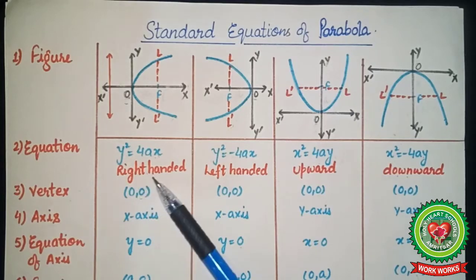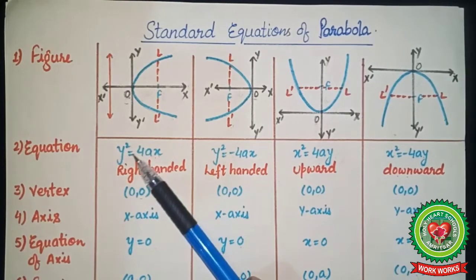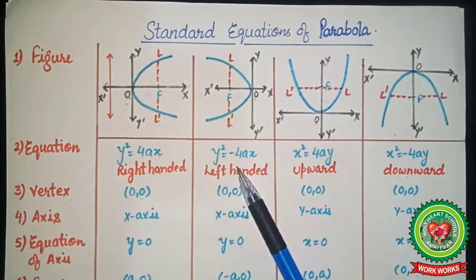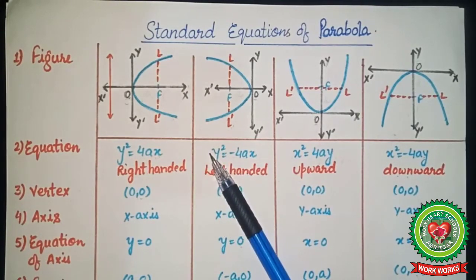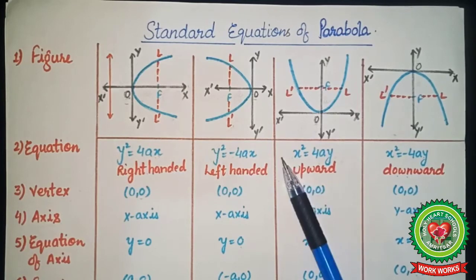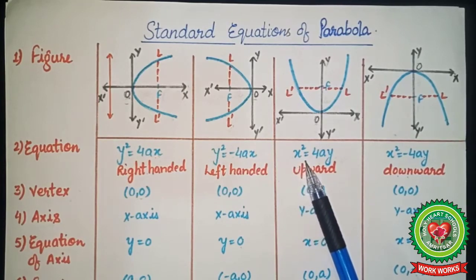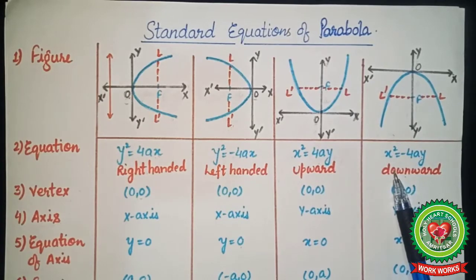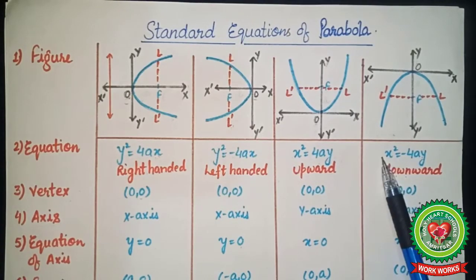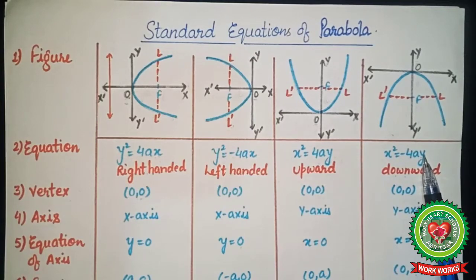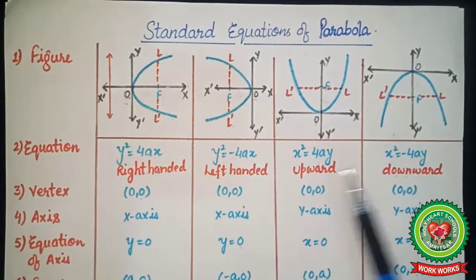The equations are: for right-handed, y² = 4ax; for left-handed, y² = −4ax; for upward, x² = 4ay; and for downward parabola, x² = −4ay. Now the next property is the vertex.